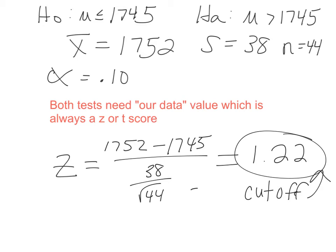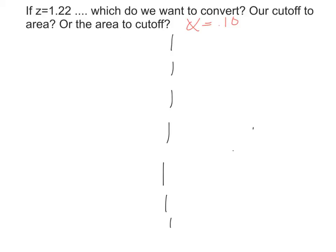Our value from the sample is 1.22, and it's important to note that this is a cutoff. We have our data (cutoff = 1.22) and our standard (alpha = 0.10, which is an area). So we need to decide: do we convert our cutoff to an area, or convert the area to a cutoff? If we're doing a p-value test, we're comparing areas directly. The 'p' reminds us of probability, and probability is area under the normal curve.